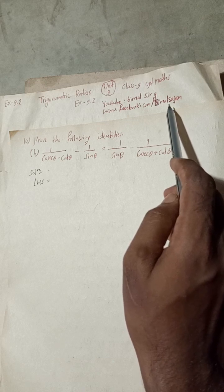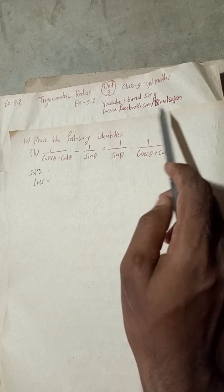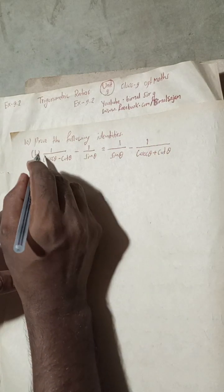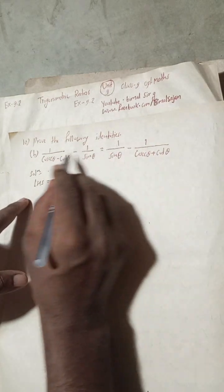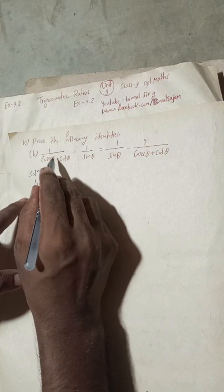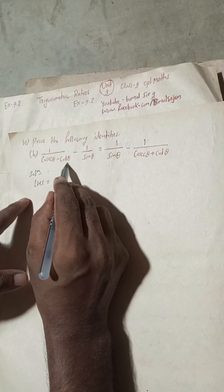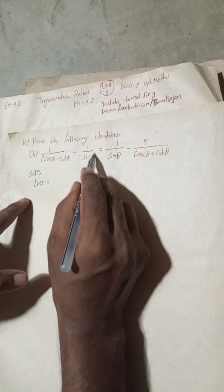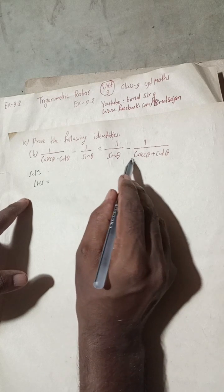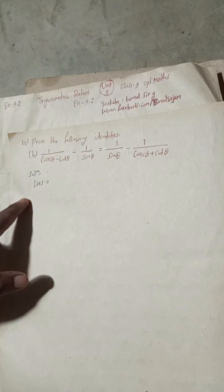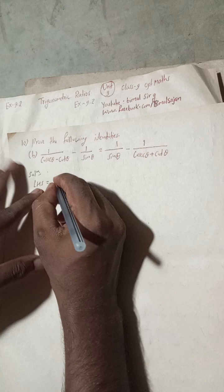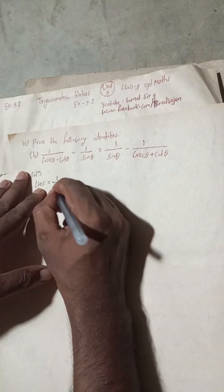Let's begin the solution. Prove the following identity — number one: one by cosine theta minus cot theta, minus one by sine theta, is equal to one by sine theta minus one by cosine theta plus cot theta. So the LHS is equal to one by cosine theta minus cot theta.